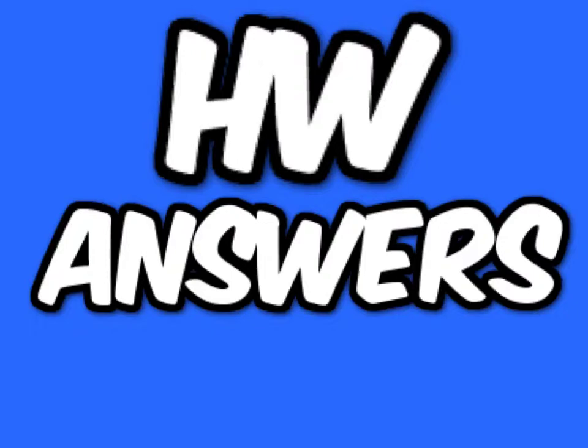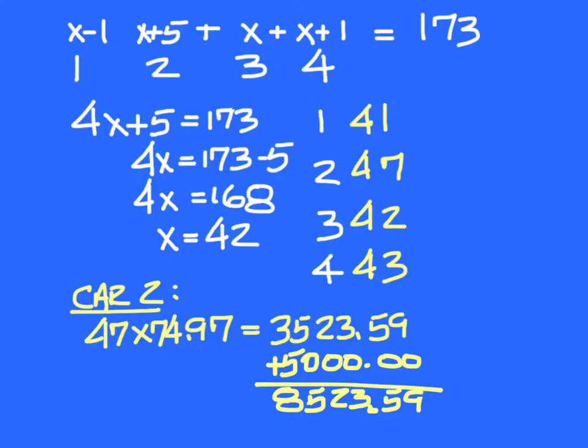Homework answers. Your expressions should be x minus 1, x plus 5, x, x plus 1, and 173 is the total. You have 4x's, negative 1 plus 5 is 4 plus 1 is 5, so you have a plus 5. Solve this down to 42 for x and find out what each one had. If you put that 42 in, you get 41, 47, 42, and 43 for each one.